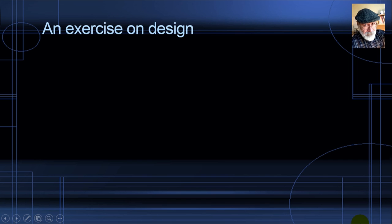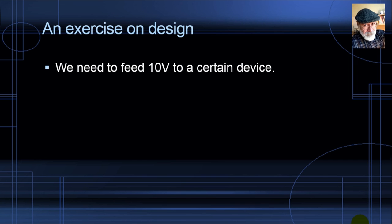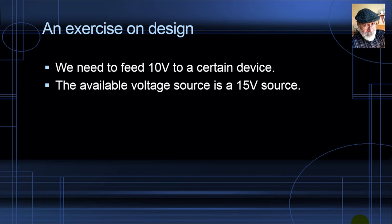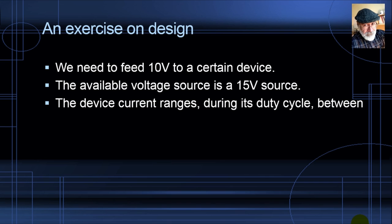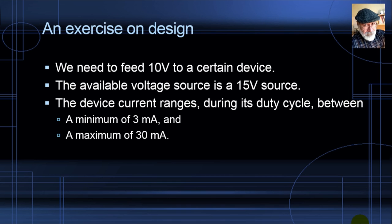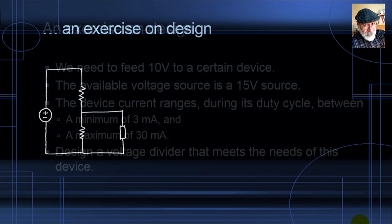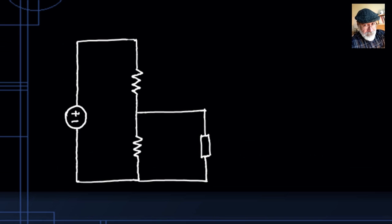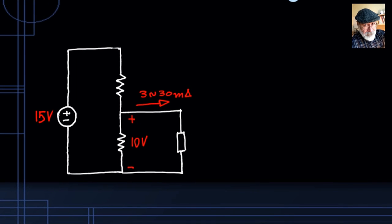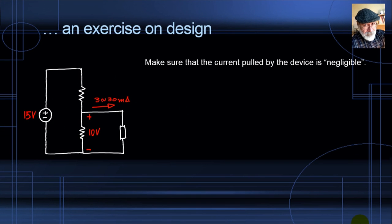Let's go now for a design exercise. We need to feed 10 volts to a device. The available voltage source is 15 volts. The device current varies during its duty cycle between a minimum of 3 milliamps and a maximum of 30 milliamps. The problem is to design a voltage divider that meets the needs of this device.